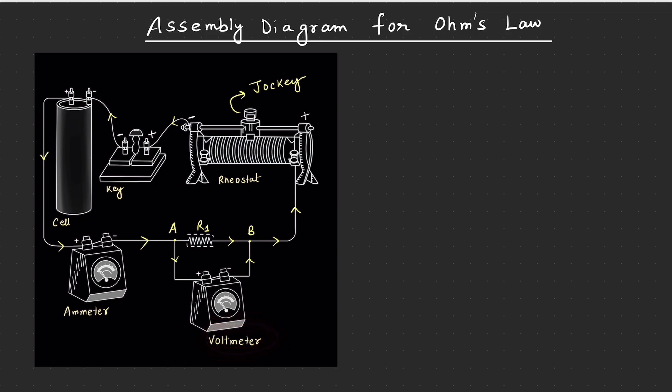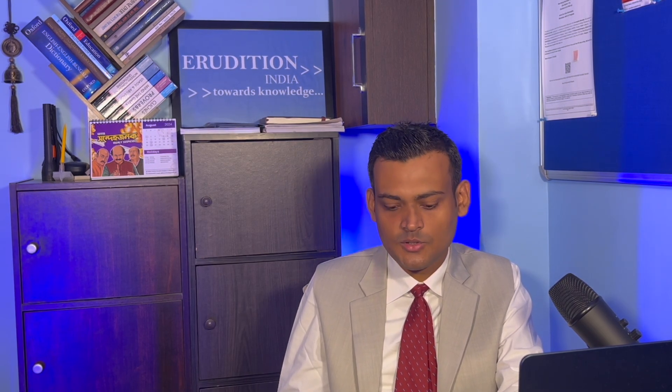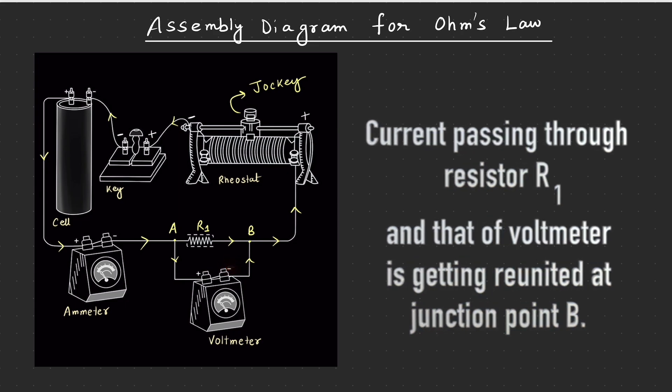Voltmeter is yet another instrument, joh measure karta hai ki humare circuit mein kitna potential difference abhi chal raha hai. Voltmeter joh measure karega, that would be measured in volt. Voltmeter ke negative terminal se kuch current nikal raha hai, wohi current joh enter kia tha and junction point B mein ja kar,